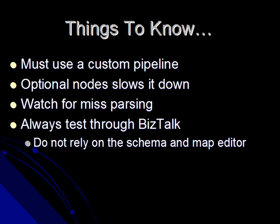Working with flat file documents, you always have to have a custom pipeline component because you have to use the flat file disassembler, and that's not anything that's pre-built. Optional nodes really slows down processing, typically because you have to switch from the speed to the complexity parsing modes. Watch out for mis-parsing when working with optional nodes, and that leads to always test through BizTalk.